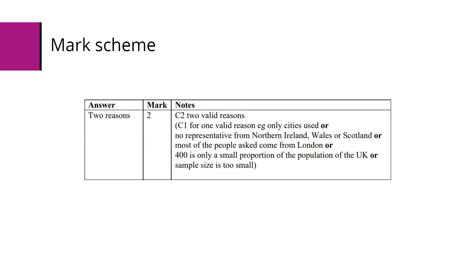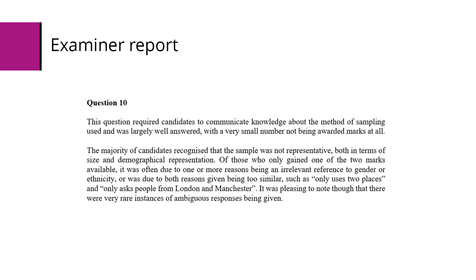Looking at the mark scheme, two marks are given for valid reasons. The sample size being a very small proportion is one valid answer. You could also mention that both places are cities, or that the survey claims to cover the UK but both locations are only in England. The examiner report notes it was generally well answered, but some students repeated essentially the same reason twice, or mentioned irrelevant factors like gender or ethnicity.